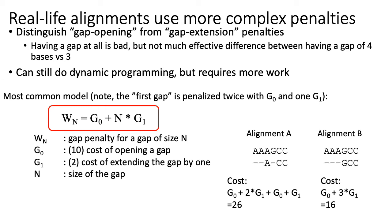Typical scoring schemes penalize a gap with an opening gap cost G0, and then additionally penalize based on how long the gap is. If a gap is two bases long, it's penalized two times the extension cost G1. So the total cost assigned to a given gap is G0 plus G1 times the number of gap characters introduced. Generally, G0 is much higher than G1, reflecting that opening a gap is bad, but extending it is not as bad as opening one.